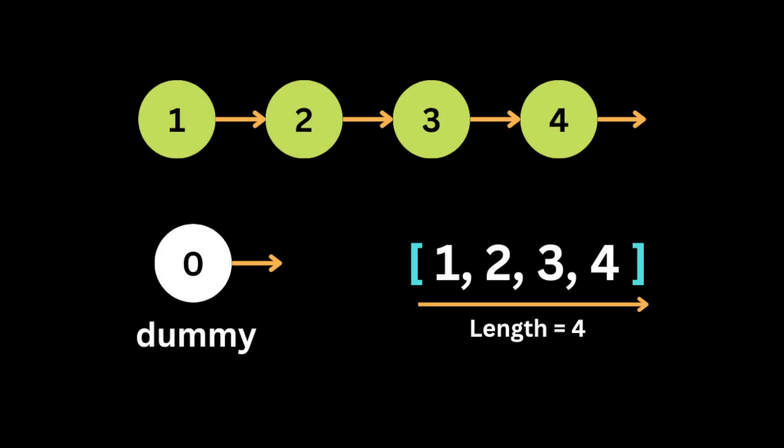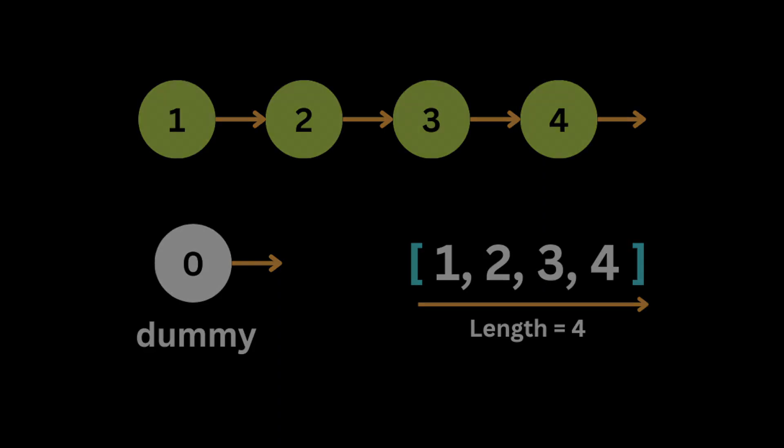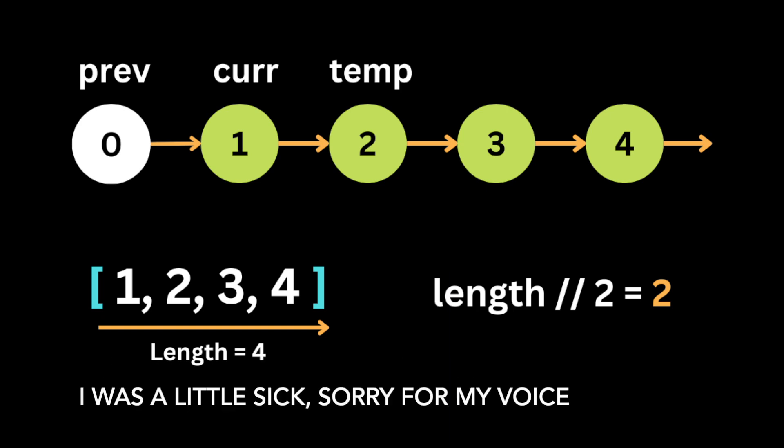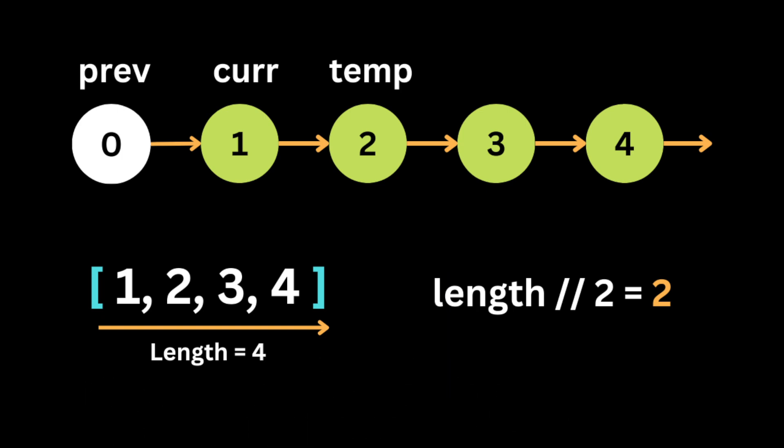We initialize a dummy node with value zero and reference it to the linked list. This dummy node helps reduce the need for special case code in the swapping logic. Then we initialize three variables: the first is 'previous', set to the dummy node; the second is 'current', set to the head node; and the third is 'temp', initialized to the node after the current node.